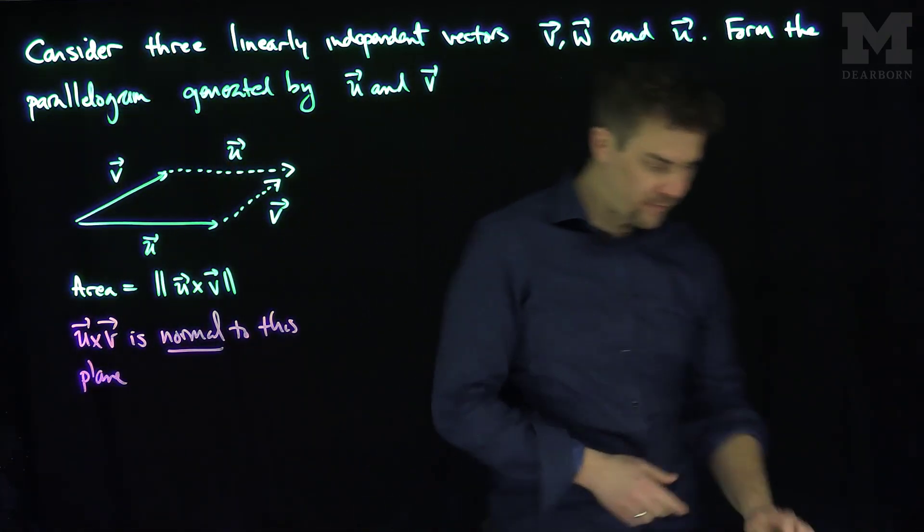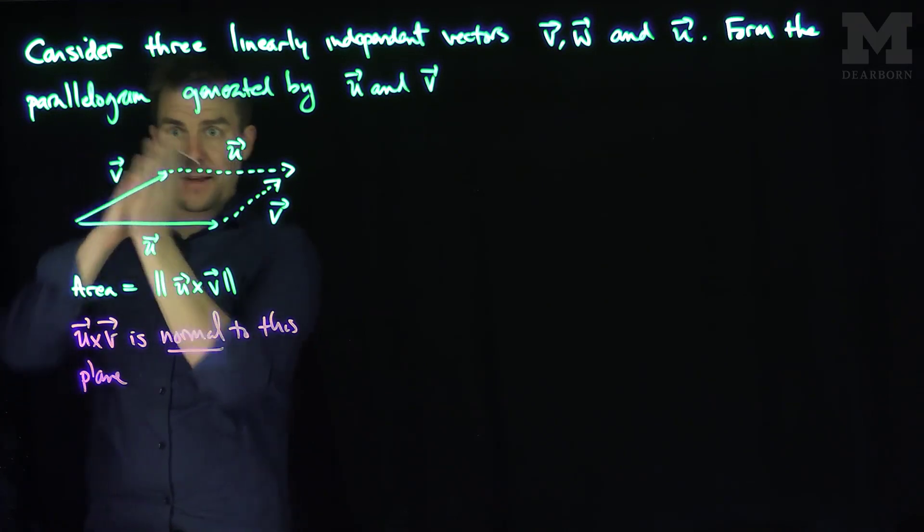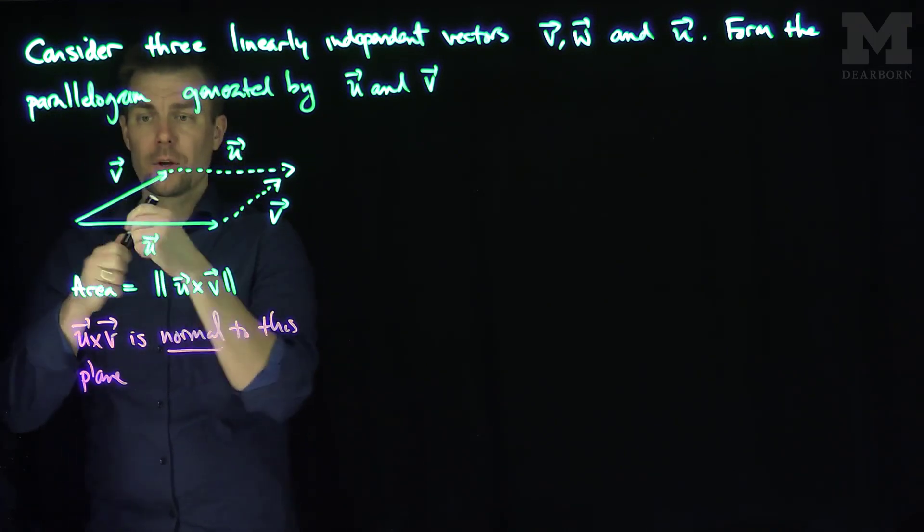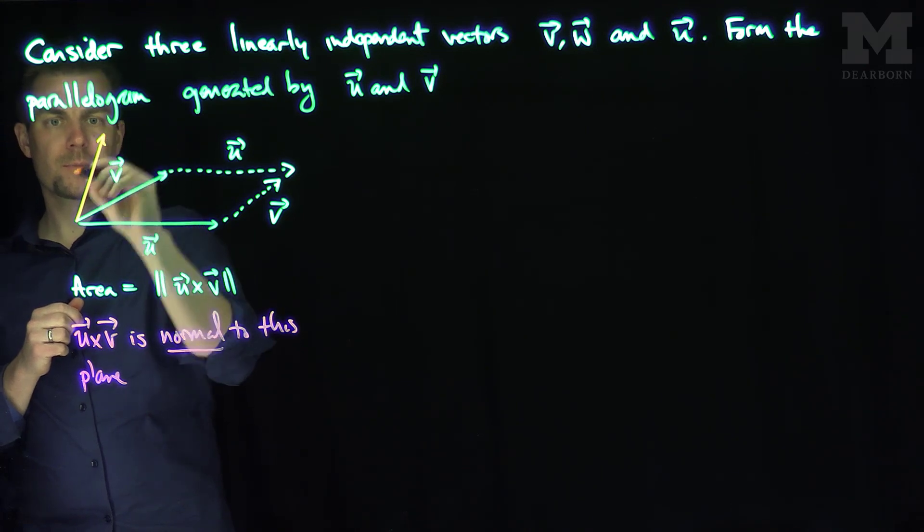Now what we can do is we'll use the third vector, which is independent of those first two vectors, which means it's not in the same plane as u and v. So w does something like this. There's my vector w.